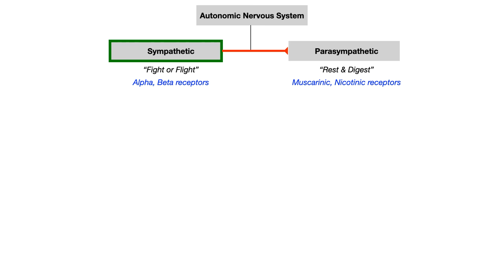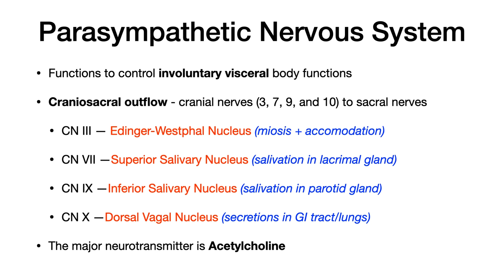Before we go further, let's paint a general overview of the parasympathetic nervous system. The bulk of today's video — all of the pharmacology — will be on the parasympathetic side. I have another video on sympathetic pharmacology, but I want the focus here to be on parasympathetic agents because those are by and large the highest yield topics that come up on USMLE and COMLEX.